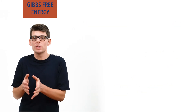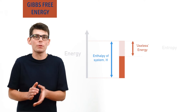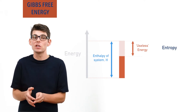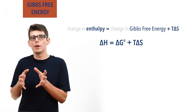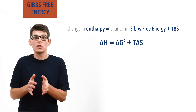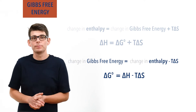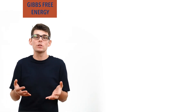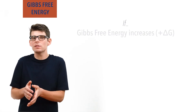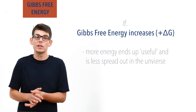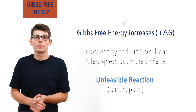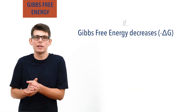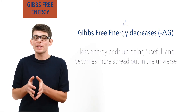Enthalpy describes total energy in a system and some of that energy isn't useful — that's entropy. Gibbs free energy can be thought of as the amount of energy that is useful. This is why delta H equals change in Gibbs free energy plus T delta S, and we can rearrange this to find the change in Gibbs free energy: delta G equals delta H minus T delta S. A negative change in Gibbs free energy shows that the useful and available energy in a system is decreasing, and therefore the reaction can occur and is feasible. Reactions that would lead to a positive change in Gibbs free energy are never feasible.